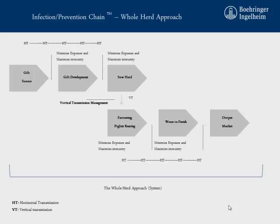Through this production chain, we have the infection chain. We have horizontal transmission in gilts coming from the gilt source, continuing through gilt development. When we introduce gilts to the sow herd, we have horizontal transmission. At that point, we also have vertical transmission — between the sow herd and farrowing piglets. After that, going through to wean-to-finish animals, we continue talking about horizontal transmission, and still horizontal transmission when we sell animals. So there are different epidemiological events throughout the whole production chain.